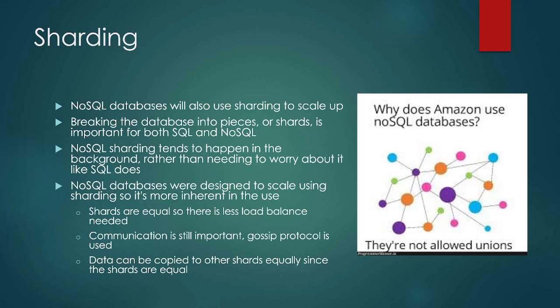NoSQL databases use sharding to scale up. Breaking up the database into pieces is important for scaling in both SQL and NoSQL, but NoSQL sharding actually happens in the background — it's already built into the design, so it just kind of happens automatically. The shards are equal, so you don't have to worry about load balancing as much. They use something called gossip protocol for communication between shards, and data can be copied to other shards equally. It's basically baked in more than it was with SQL.